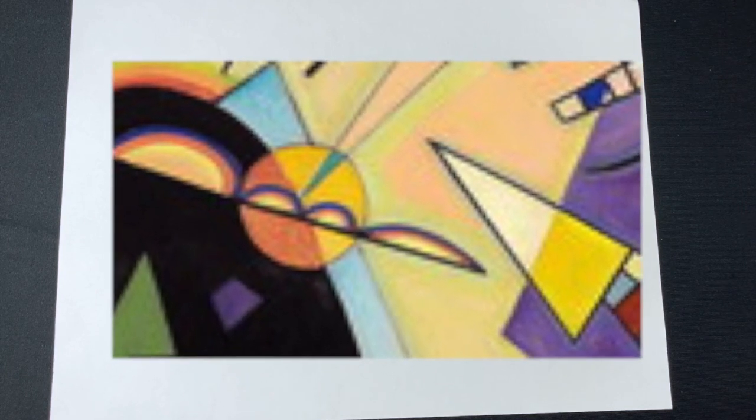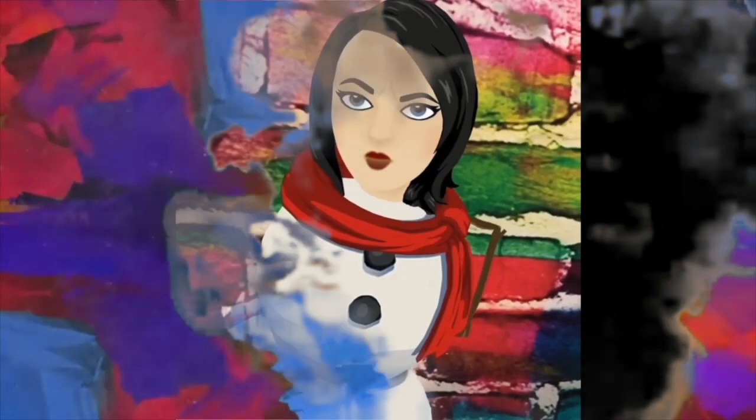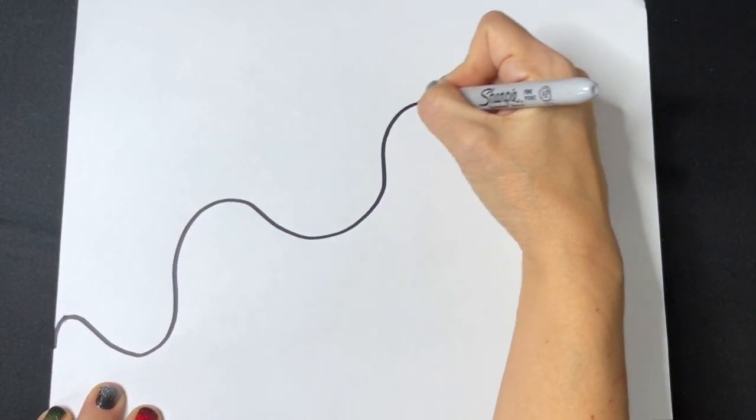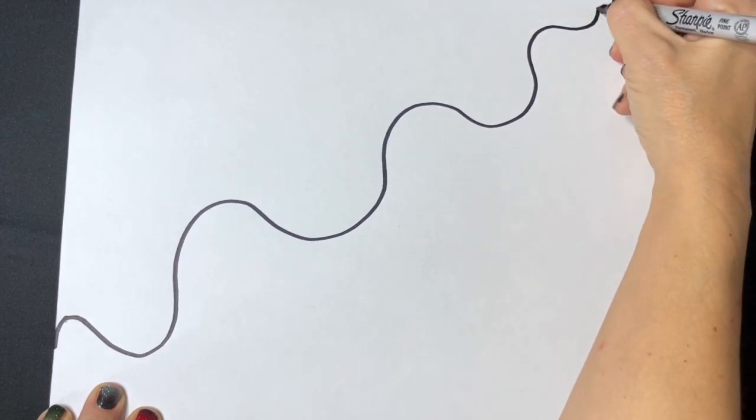I think I'm going to start with just a wavy line. Remember yours does not have to look like mine. I'm going to start with a wavy line that goes up and divides my paper.